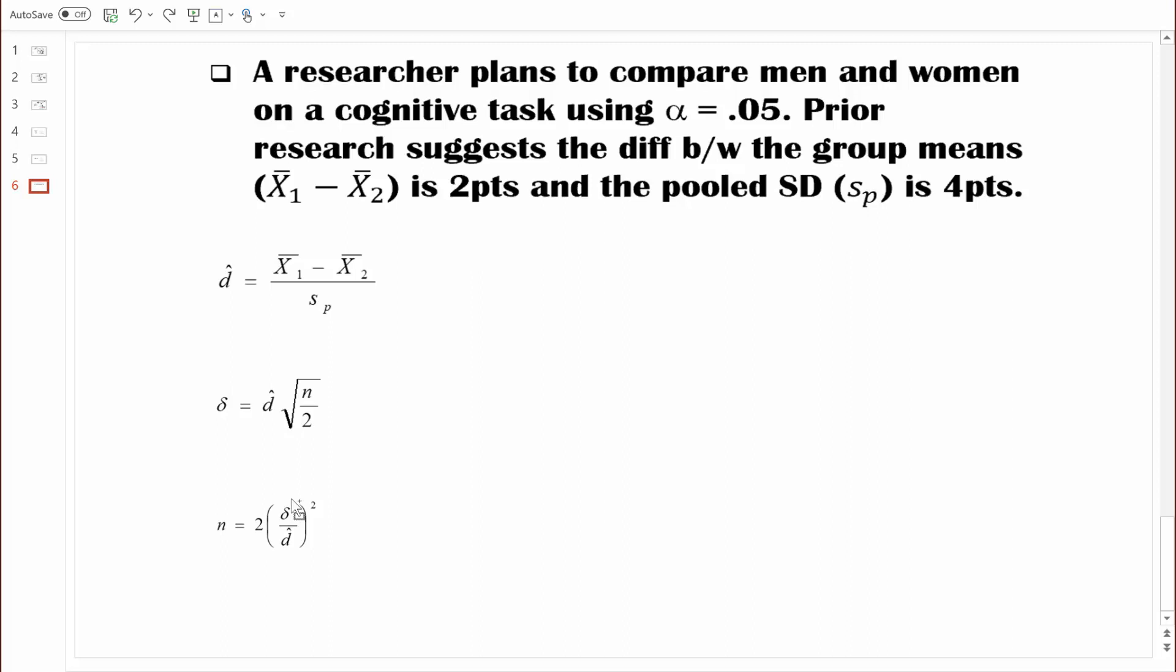Each time we've computed effect size, we've used Cohen's D. And remember, Cohen's D differs based on the type of research design we're dealing with. And in this particular research design, we're comparing two completely separate, independent groups. So we would want to use this formula for Cohen's D. In this situation, Cohen's D is looking first at the differences between the groups. And the difference between these two groups was a difference of two points. Cohen's D, of course, is a standardized effect size.